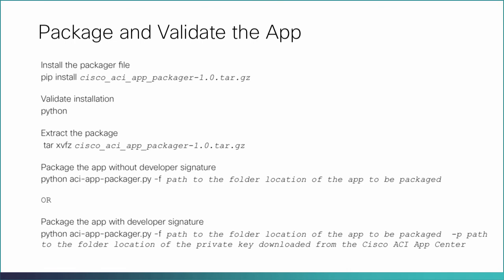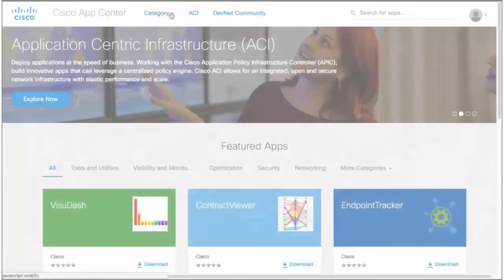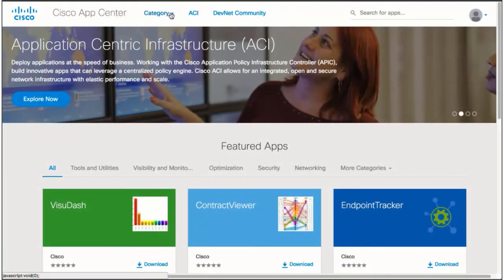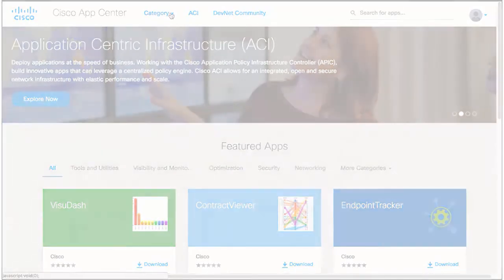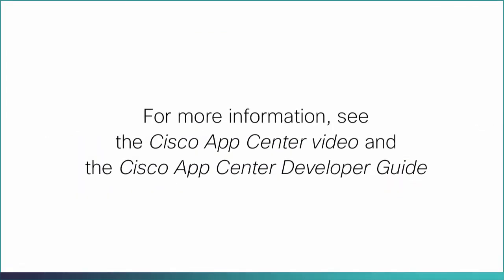After developing the app, enter the following commands to package and validate the app. Once the app is packaged, you can publish it to the Cisco App Center and then upload it to Cisco APIC. For more information, see the Cisco App Center video and the Cisco App Center Developer Guide.